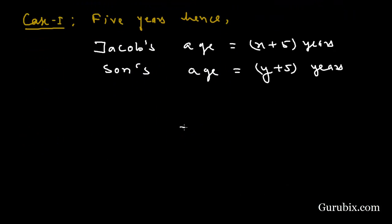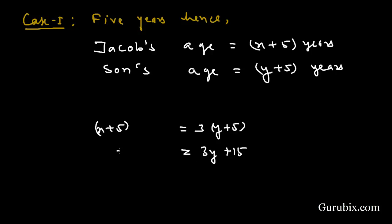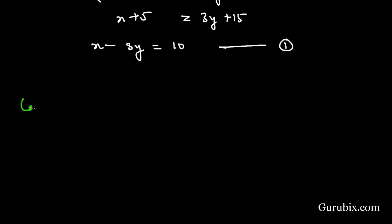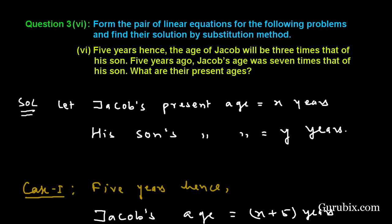Jacob's age five years hence is X plus five, and his son's age is Y plus five. Since Jacob is three times his son's age, we multiply the son's age by three to get three Y plus fifteen. Setting X plus five equal to three Y plus fifteen gives us X minus three Y equals ten. This is Equation 1.